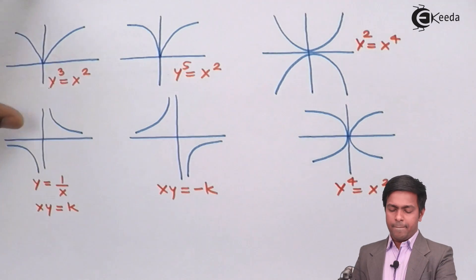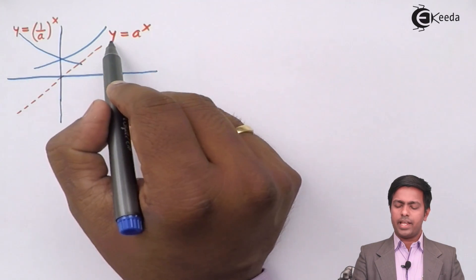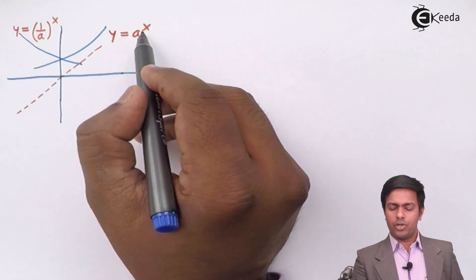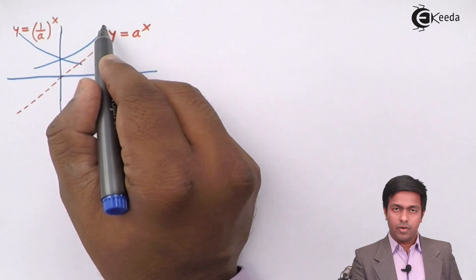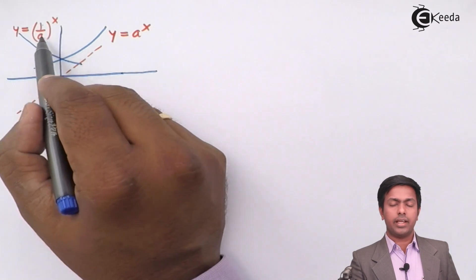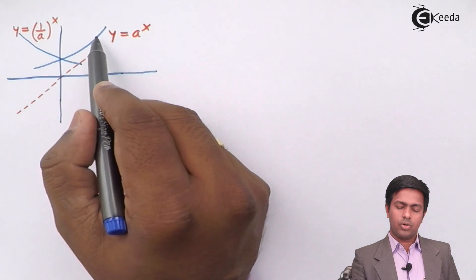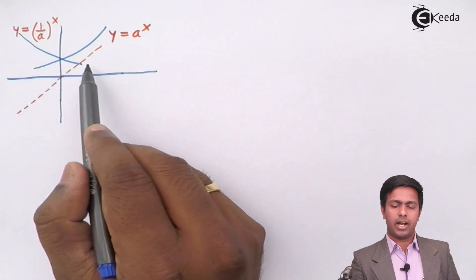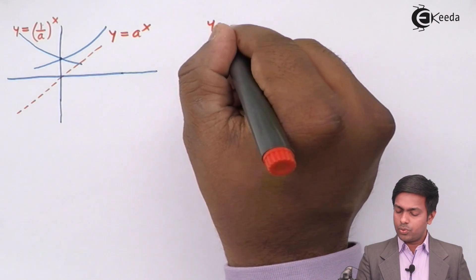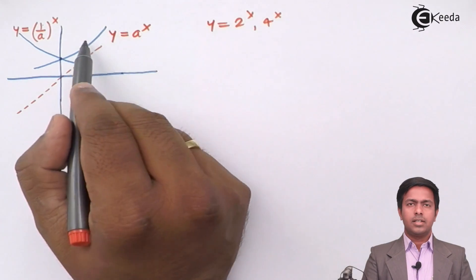Finally, Y = aˣ is called the exponential curve. This curve goes from the second quadrant into the first quadrant. If we take the reciprocal — Y = (1/a)ˣ — the curve is the mirror image, going from the first quadrant into the second, intersecting at one common point. Examples include Y = 2ˣ or Y = 4ˣ — all of these give the same general exponential shape.